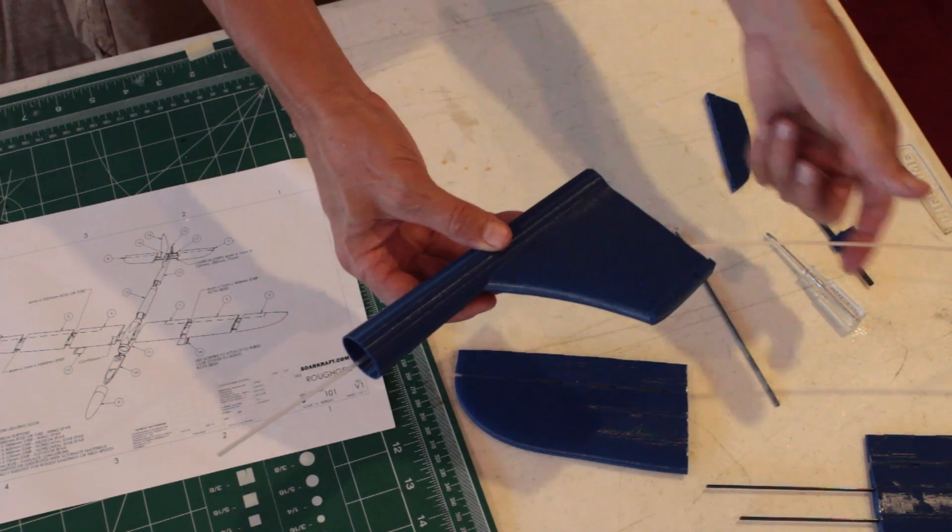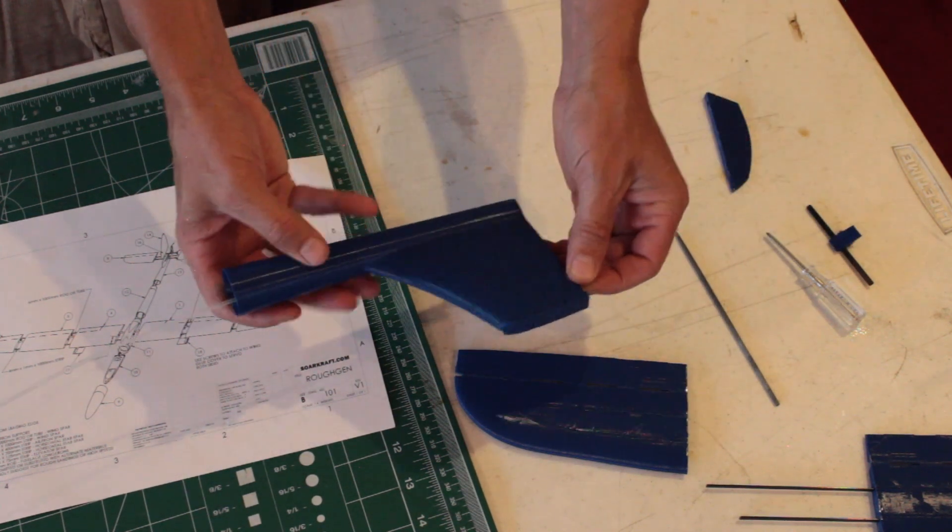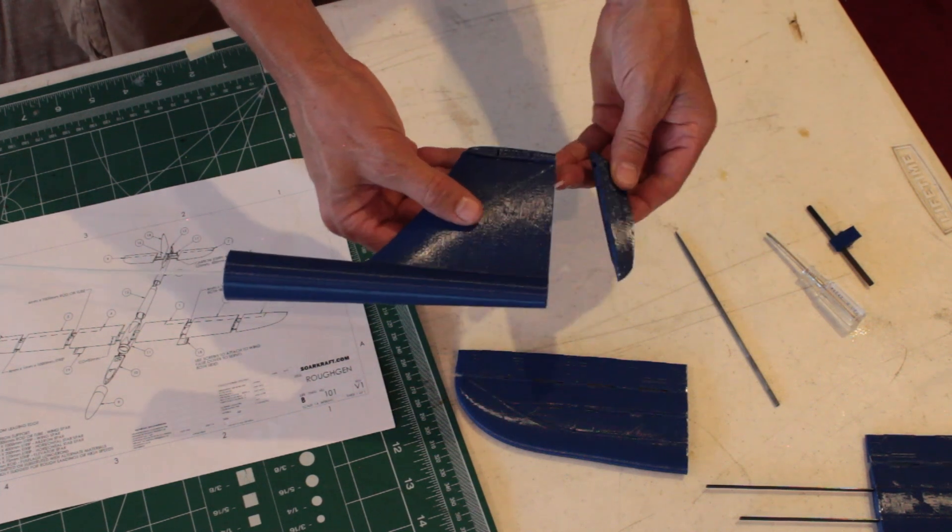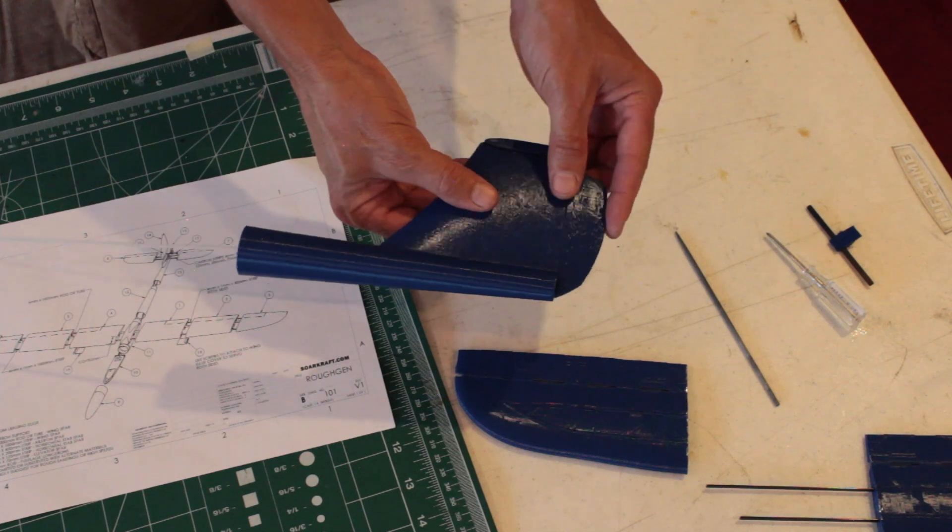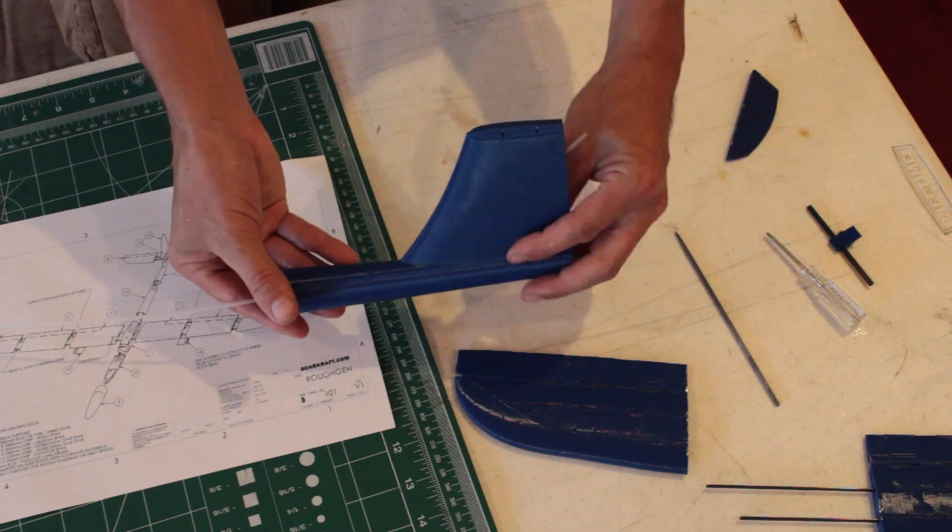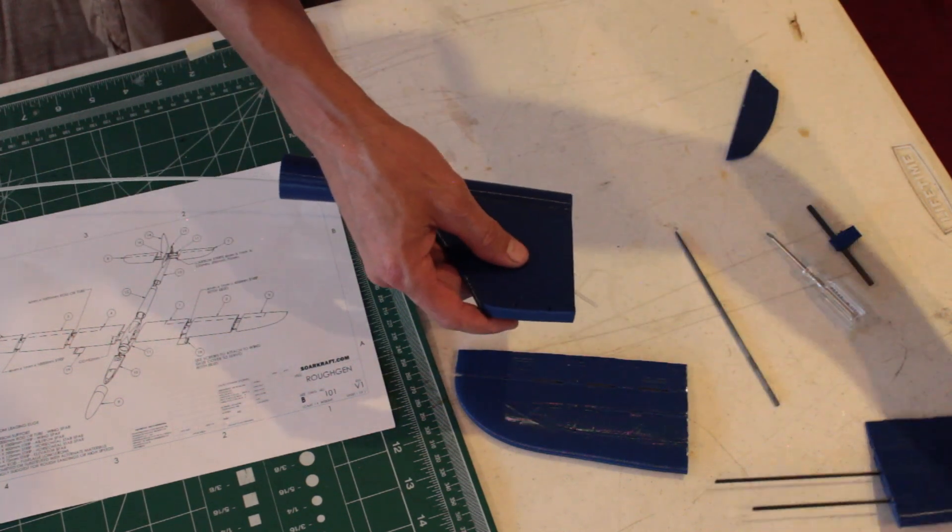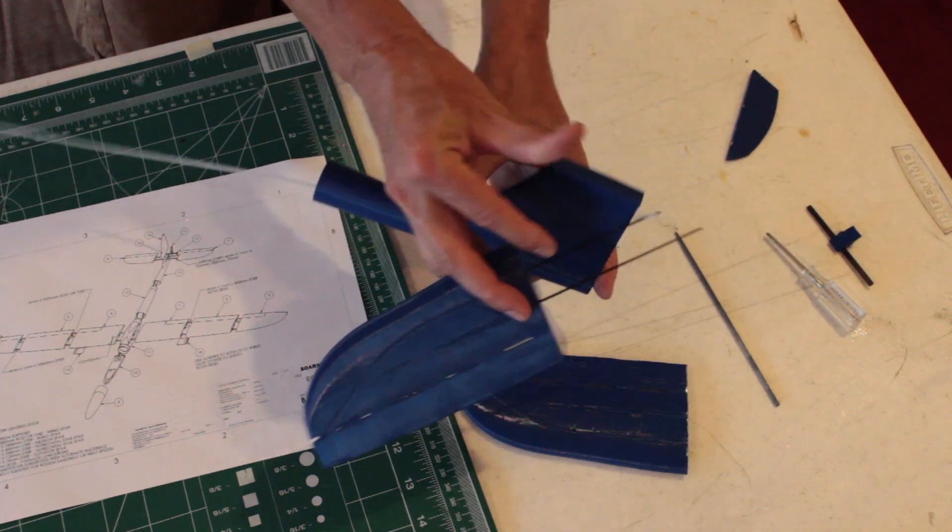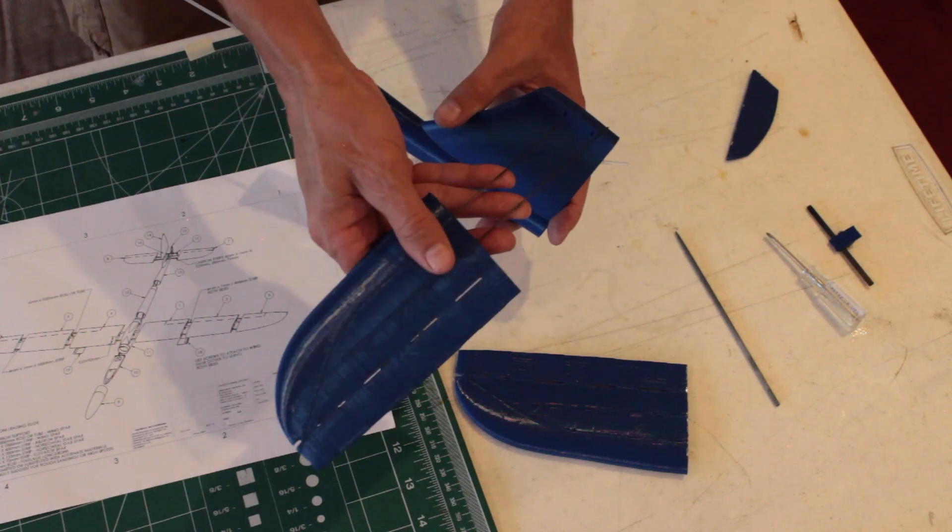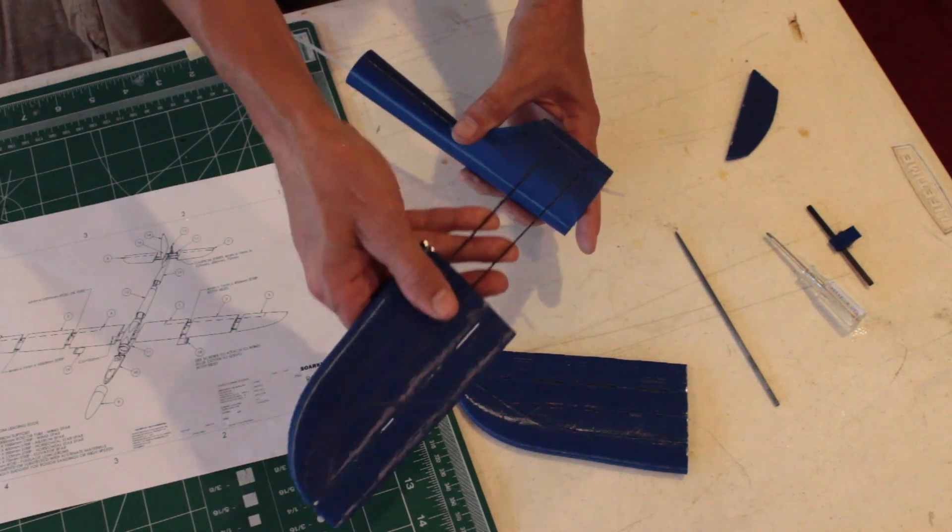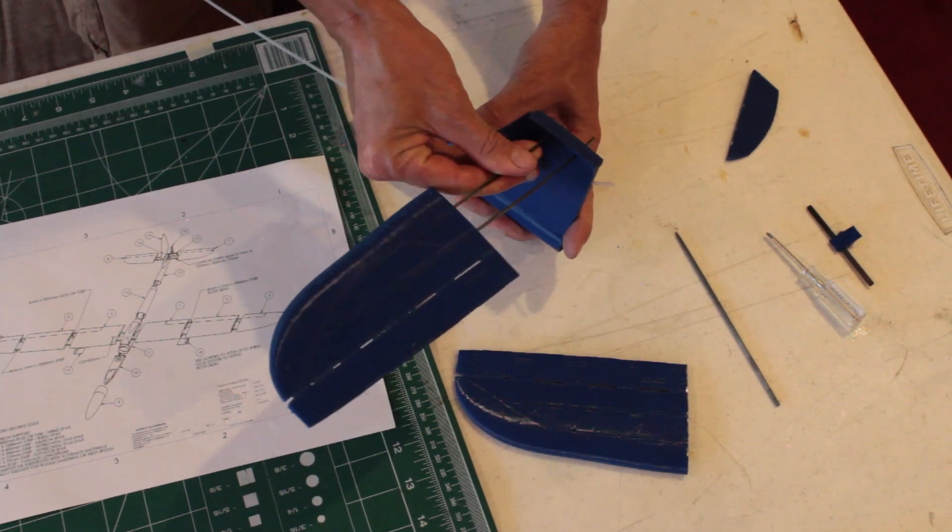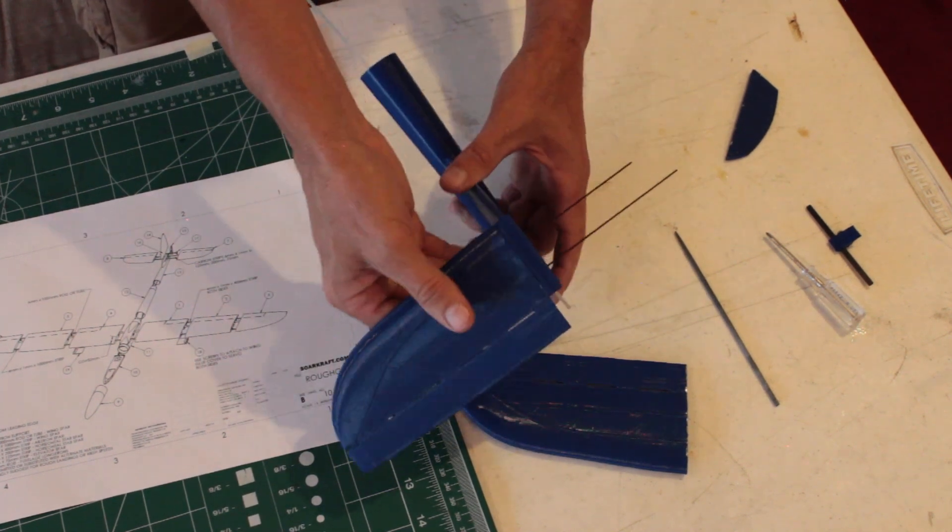You feed it through, then the rudder kind of finishes that off. You may need to clean up the holes through there for the carbon to get through. You can glue these into one side, you can put the carbon in the tailpiece and make sure they're centered and lined up. There are several ways to do it.